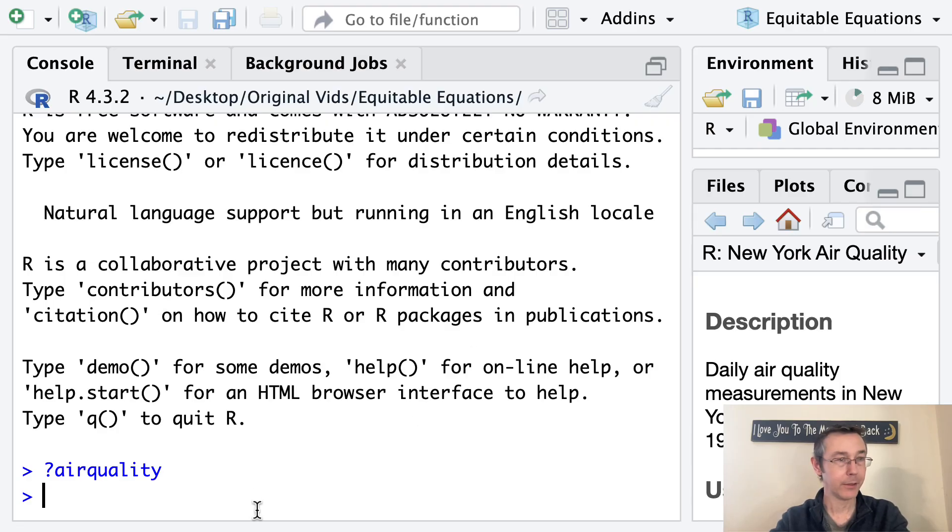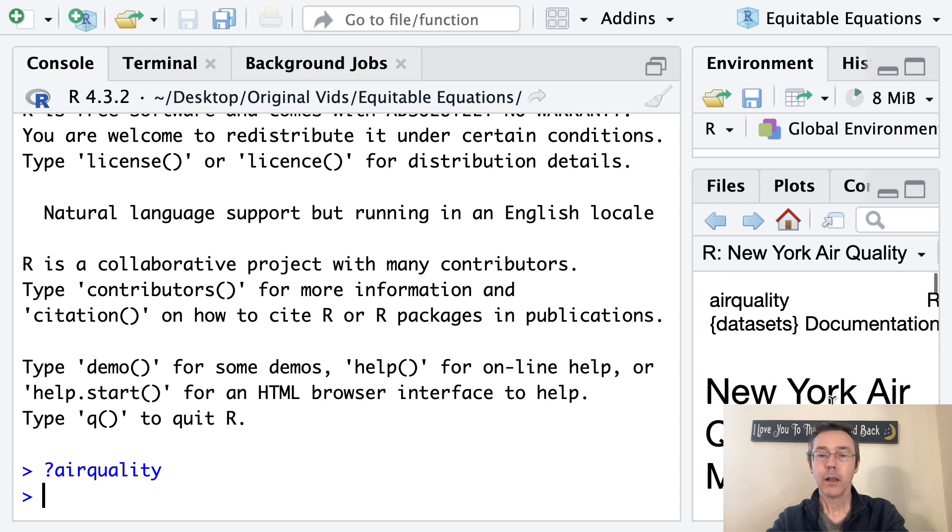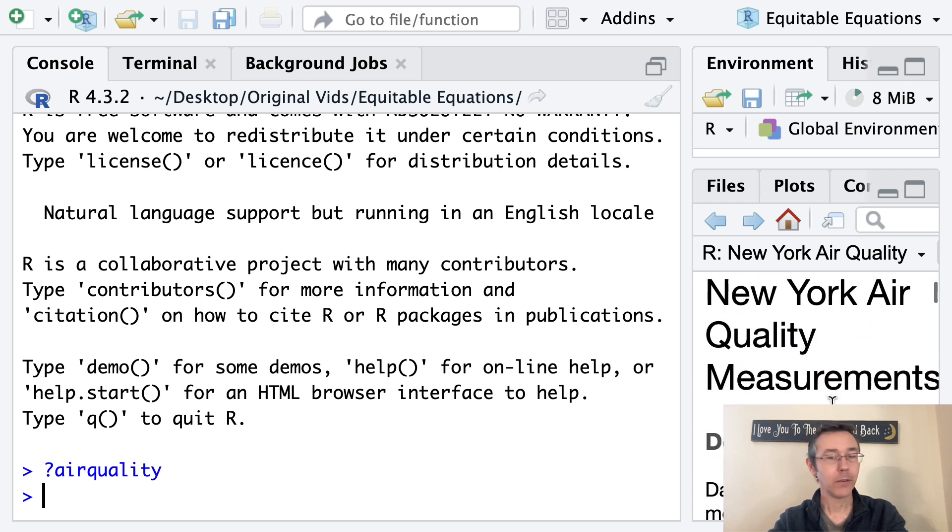I have already pulled up a help file for the air quality data set. This consists of observations of New York air quality from 1973. For the purposes of this vid, we're going to treat that like a simple random sample and not ask too many questions about that data. Although we recognize we should always be asking real questions about how our data was collected and what its impact might be once we're done analyzing it.